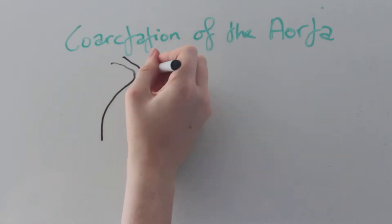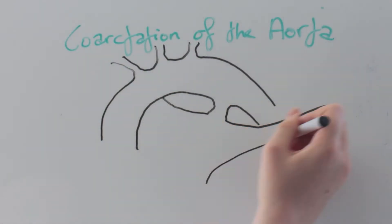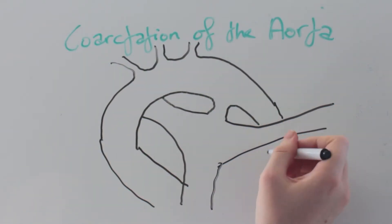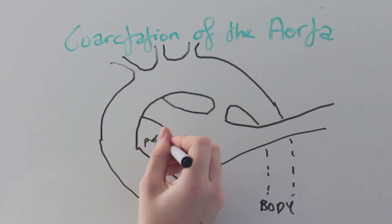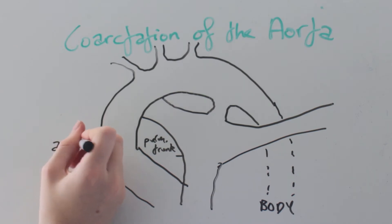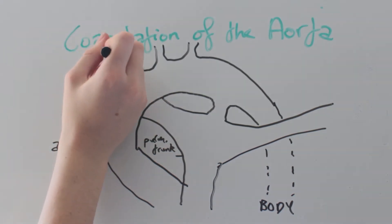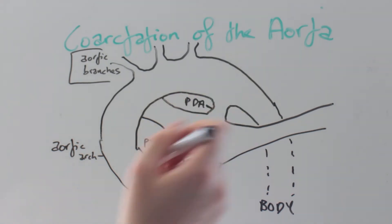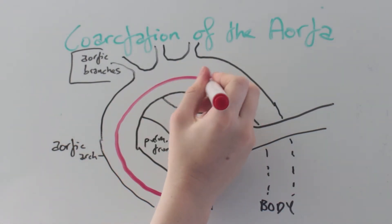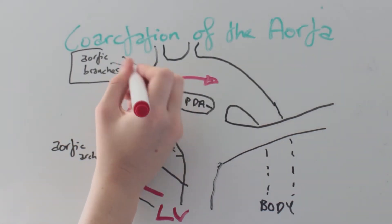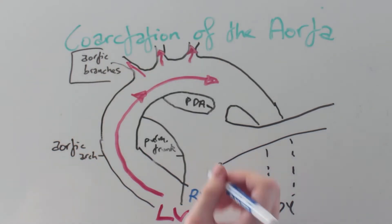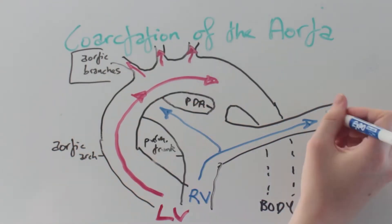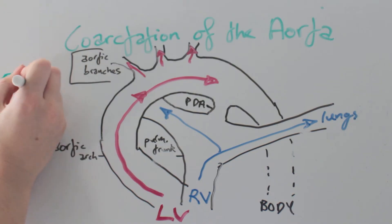It's easier to understand with a picture. Here we have the aorta delivering blood to the body, the pulmonary trunk, the aortic arch and branches of the aorta. Here is our patent ductus arteriosus. Imagine our left ventricle pumping oxygenated blood to the body while the right ventricle pumps deoxygenated blood to the lungs to be oxygenated.